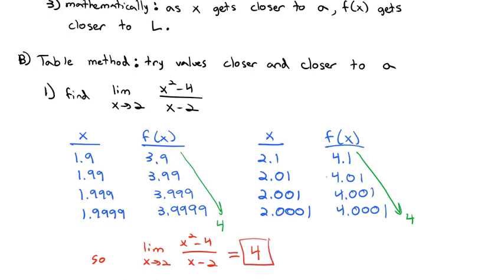This doesn't mean that (x²-4)/(x-2) equals 4 when x is 2 — it's undefined at that point; there's nothing there. The limit is just what should be there, even if it's not. As we get really close to 2, we're getting really close to 4.